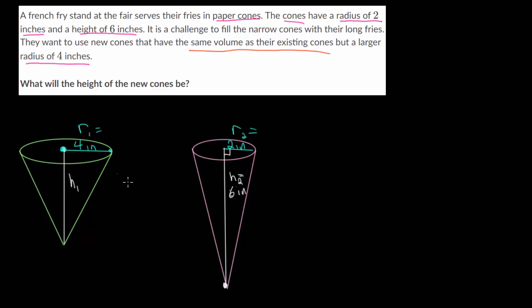Now, to figure this out, we need to figure out the volume of this original cone and use that volume to figure out the height in our new cone. Remember the formula for the volume of a cone: it's equal to the area of the base of the cone multiplied by the height and then divided by 3.